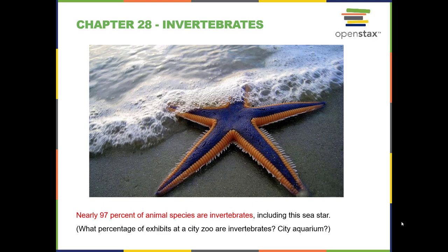This lecture is Chapter 28, The Invertebrates. Something that students are often surprised about is the fact that nearly 97% of animal species are invertebrates, meaning they don't have a backbone, including the sea star, formerly known as starfish.